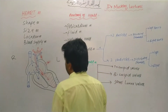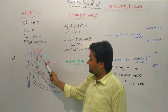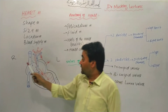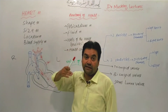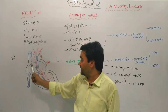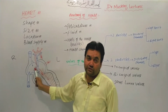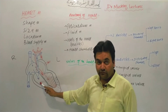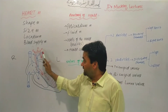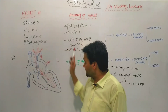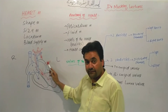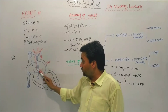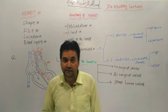The left atrium receives blood from the pulmonary vein. The right atrium receives deoxygenated blood via the superior vena cava, inferior vena cava, and coronary vein. The right ventricle pumps blood through the pulmonary artery to the lungs. The left atrium receives oxygenated blood via the pulmonary vein, and the left ventricle distributes it through the aorta to the body.